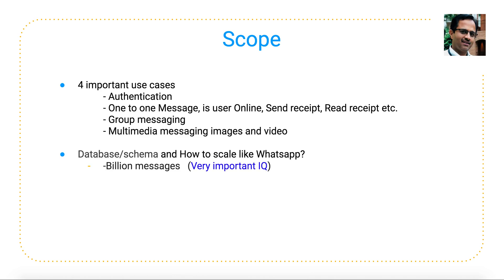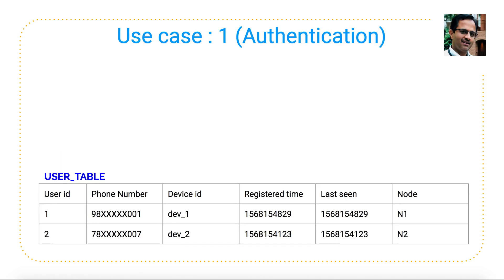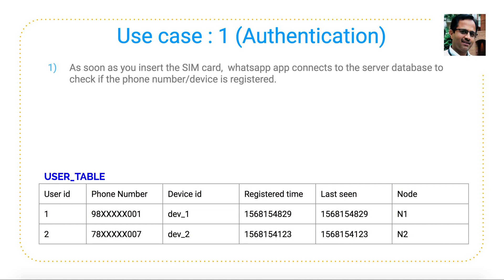Let's see how authentication works in WhatsApp. We need a user table with information like user ID, phone number, device ID, registration time, last seen, and the node. The node is a chat server pre-connected for a specific user. As a first step, you insert a SIM card or download WhatsApp from the App Store or Google Play Store.